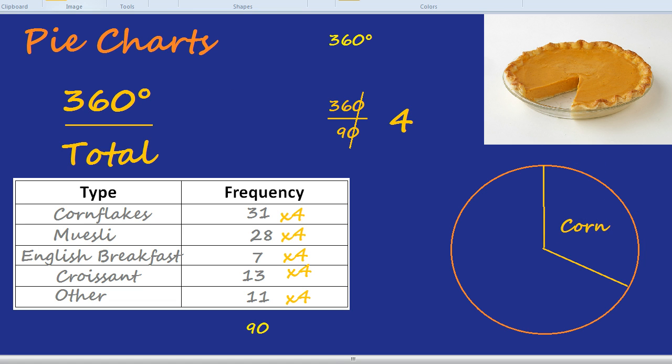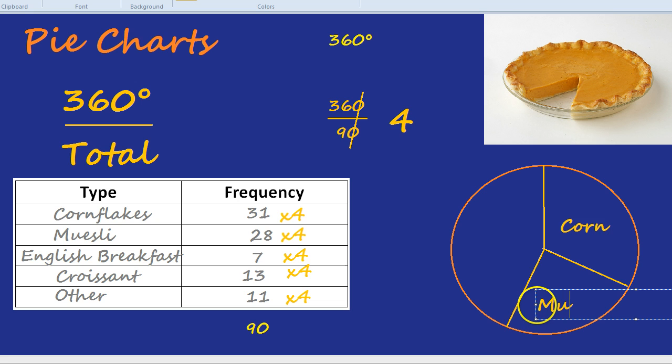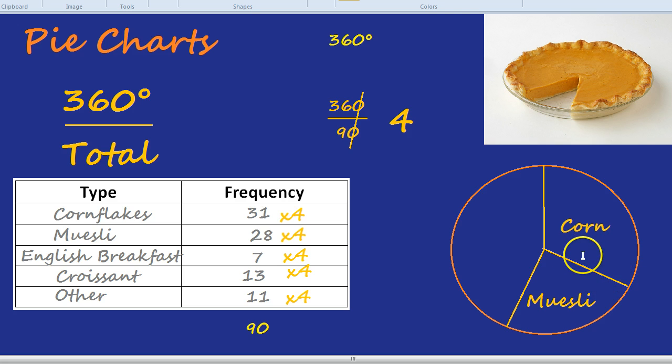The next angle would be 28 times 4, that's 112, and that would be here, which is muesli. And you'd have to obviously measure correctly with your protractor. So you'd start off on this line and measure out your angle of 112, and that's muesli. And then you'd finish it off and it would fit around the whole circle.